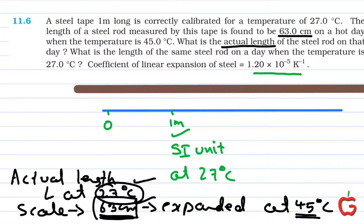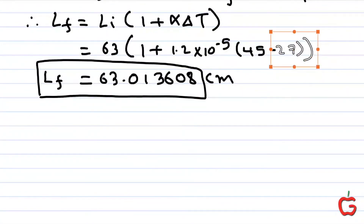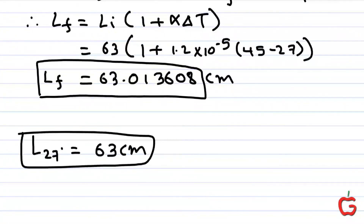When the temperature is 27 degrees Celsius, the length of the rod is 63 centimeters — that is the initial length. The length at 27 degrees Celsius is 63 centimeters itself.